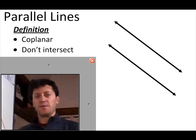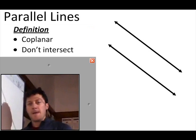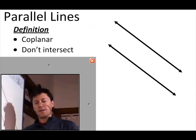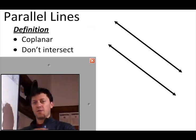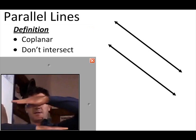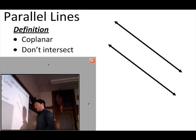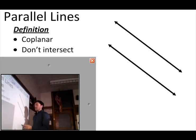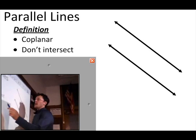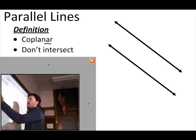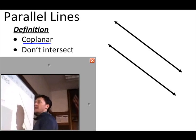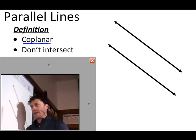You've seen parallel lines before and you know that they don't intersect — they're two lines that go straight across without touching each other. What we're going to add here is that they have to be coplanar.